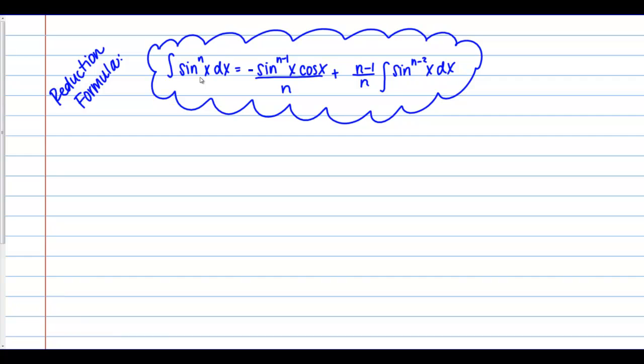The reason this is called a reduction formula is because it takes this integral of sine to the n, and it gives us an integral of sine to the n minus 2, you'll see here at the end of the formula. I've reduced the power of the sine in my integral. How did they come up with this formula? Well, it's a little complicated, but I'm going to show you the steps here, just because it's pretty interesting.